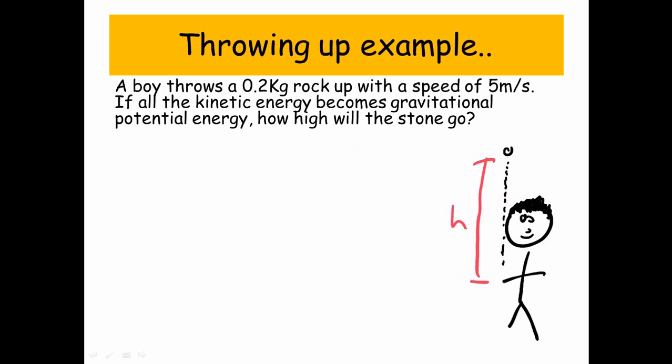Throwing up example. A boy throws a 0.2 kilogram rock up with a speed of 5 meters per second. If all the kinetic energy became gravitational potential energy, how high will the stone go?